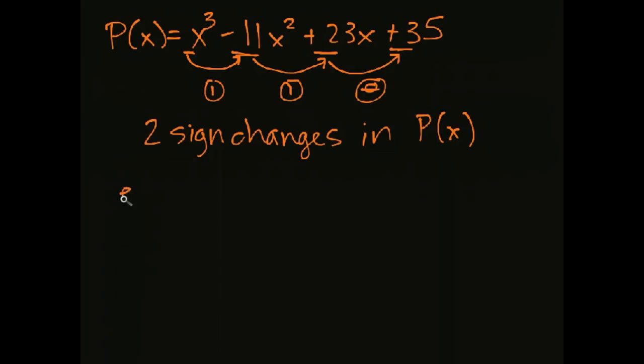So we have two sign changes in p(x). So that means we either have either two or less than that by an even whole number. Well, what's an even whole number? Two, four, six, eight. So two minus two is zero. Can I subtract four? I can't because I can't have a negative number of zeros. So we either have two or zero positive real zeros. Now these don't have to be rational, but it does mean as soon as I find one, so like I found five or seven, then I know that there's a second one. So once I can rule out the fact that there's zero, and in this case there was two.